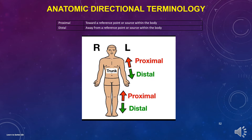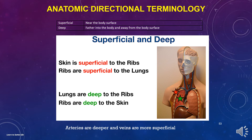Proximal means toward a reference point or source within the body — closer to the reference point. Distal means away from a reference point or source within the body; think of distal as distant or far. Superficial is near the body's surface. Deep is farther into the body, far from the body's surface. For example, arteries are deep and veins are superficial.